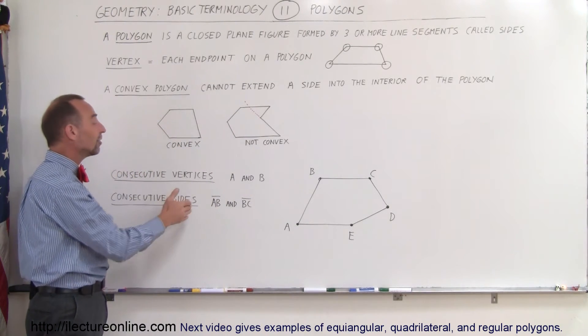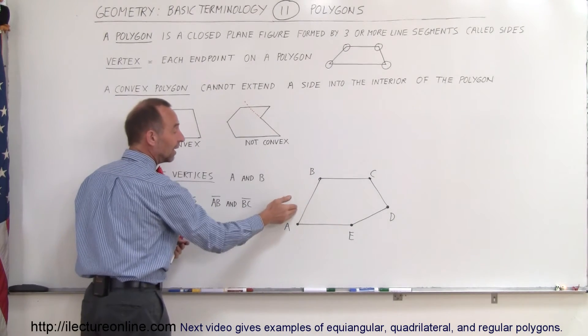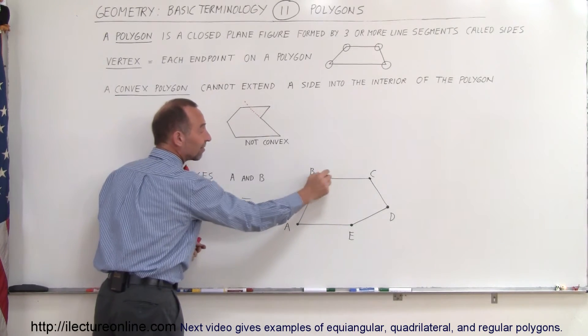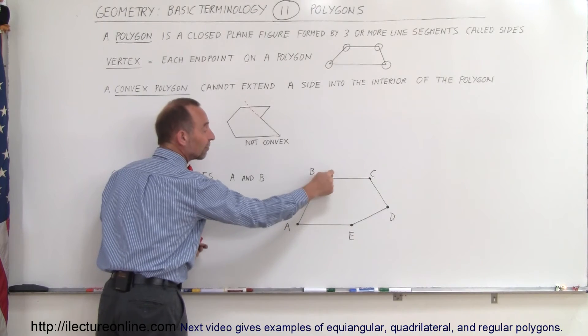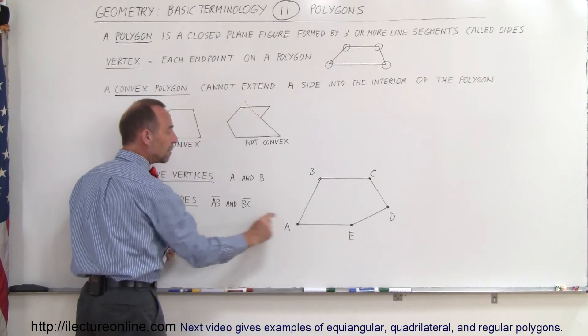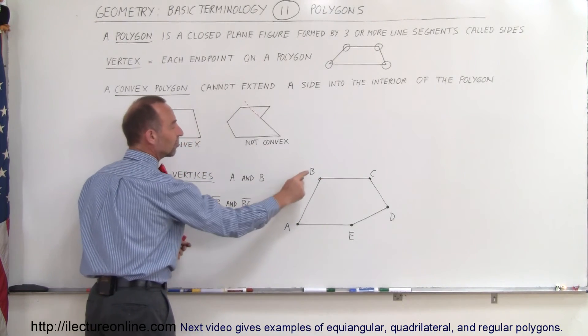And finally, consecutive sides means that if you have one line segment, which is a side, and then you move on to the next line segment, this would then be a consecutive line segment. So the line segment AB is consecutive to the line segment BC.